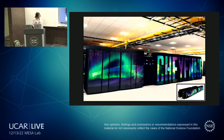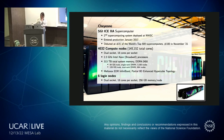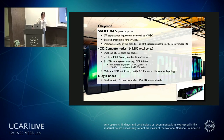Cheyenne is the second supercomputer deployed here, entering production in January 2012. It debuted as number 21 of the world's top 500 supercomputers, and four years later had fallen to number 100 — which is still impressive. In terms of specs, there are about 4,032 compute nodes totaling roughly 145,000 cores. There's no limitation on job size, though requesting the entire system means waiting longer in queue.